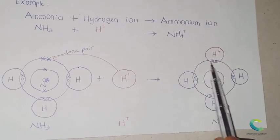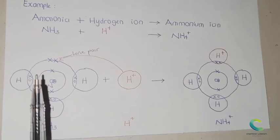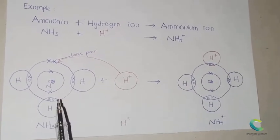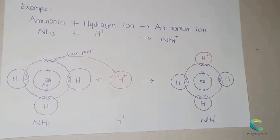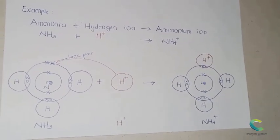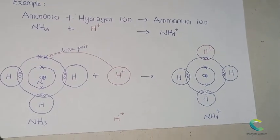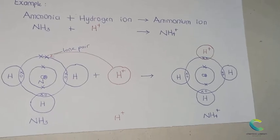That's how dative bonding happens, in that only one atom out of the two combining atoms supplies the shared pair of electrons. Meanwhile, the other atom does not supply anything. What it does is that it just attaches itself to the lone pair of electrons on the other atom. Let me show another example.